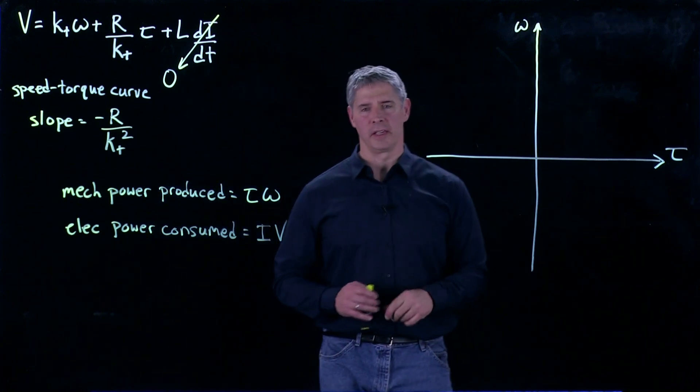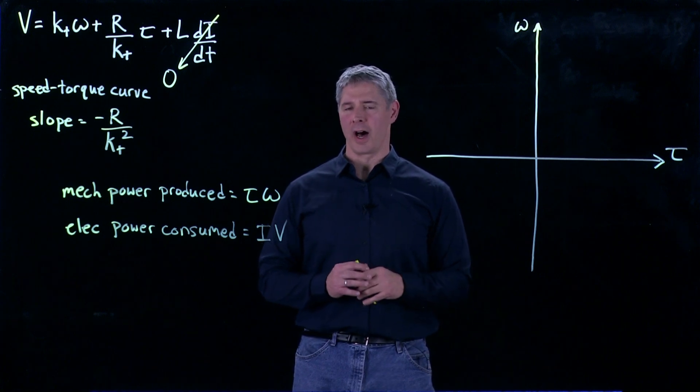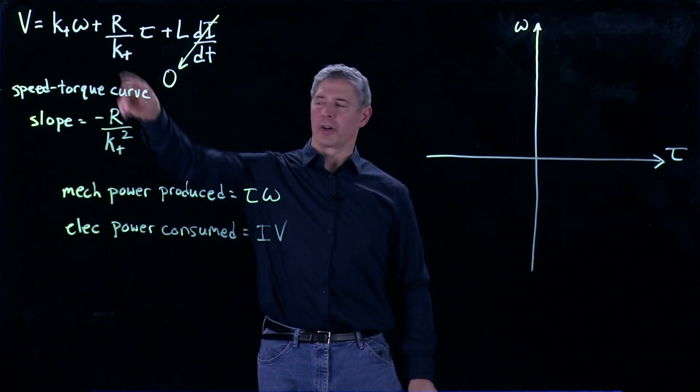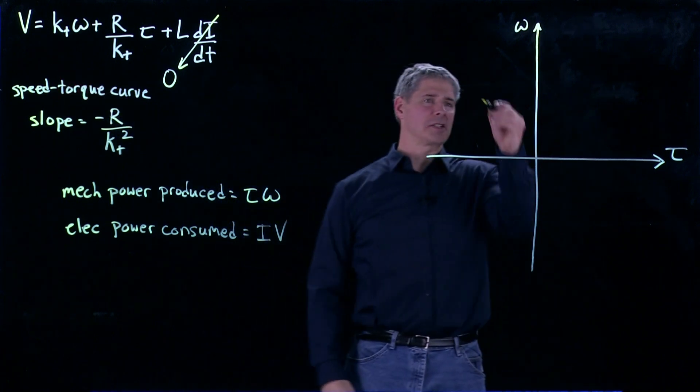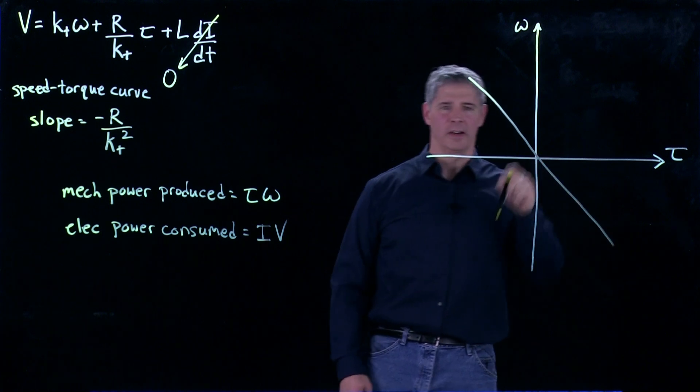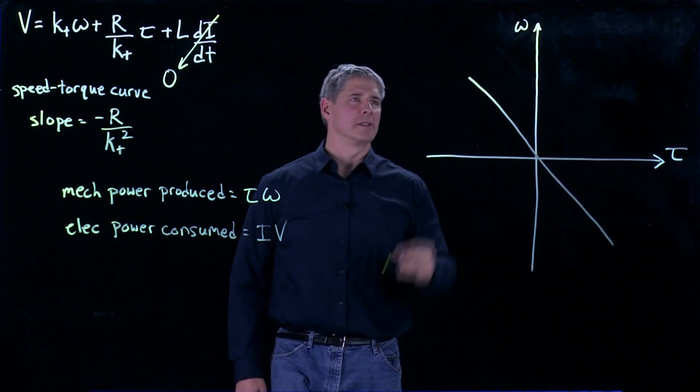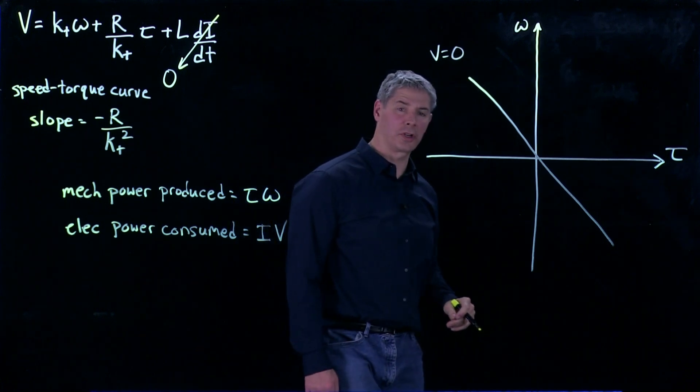Now to be able to visualize the electrical power consumed by a motor, it'll be helpful to draw the speed-torque curve where the voltage is equal to zero. And so that's just going to be a curve that looks something like this, intersecting here at zero. And so this is the V equals zero speed-torque curve.